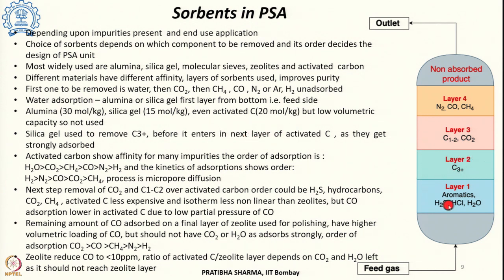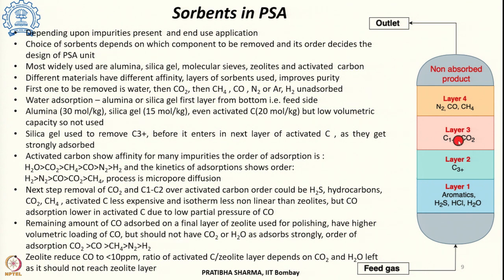Once water content is removed, the next layer is for removal of higher hydrocarbons — C3 and C3+ hydrocarbons are removed in layer 2 using silica gel. It is essential to remove C3+ or higher hydrocarbons here because the third layer of activated carbon gets poisoned by or strongly adsorbs C3+ compounds, making it very difficult to then desorb them.